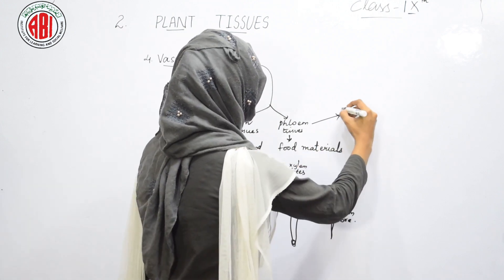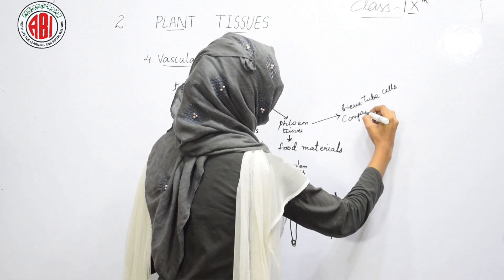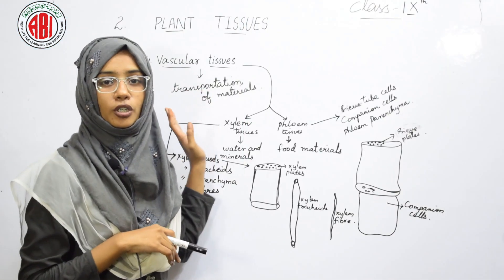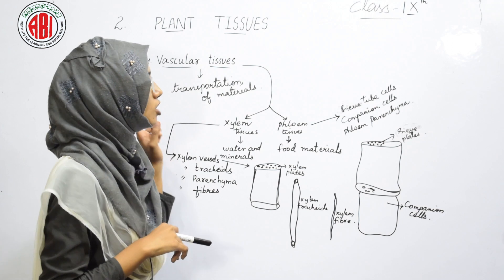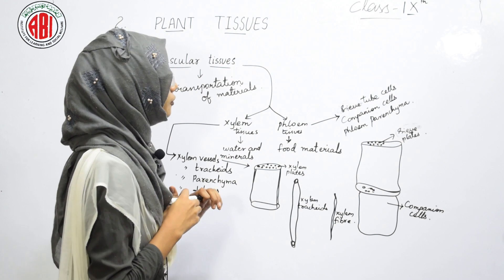When we see the structure of phloem tissues, it shows sieve tube cells, companion cells, and phloem parenchyma. Sieve tube cells are elongated cells with perforated plates at their ends called sieve plates. Along with these sieve tube cells, some cells called companion cells are attached to them. These two types of tissues play a major role in carrying out transportation of materials inside the plant body.